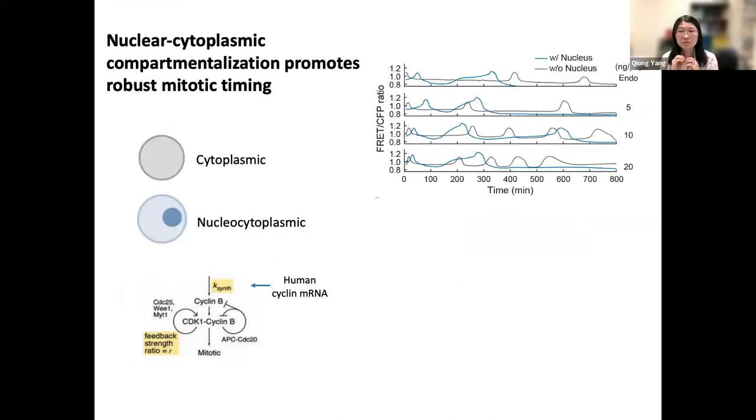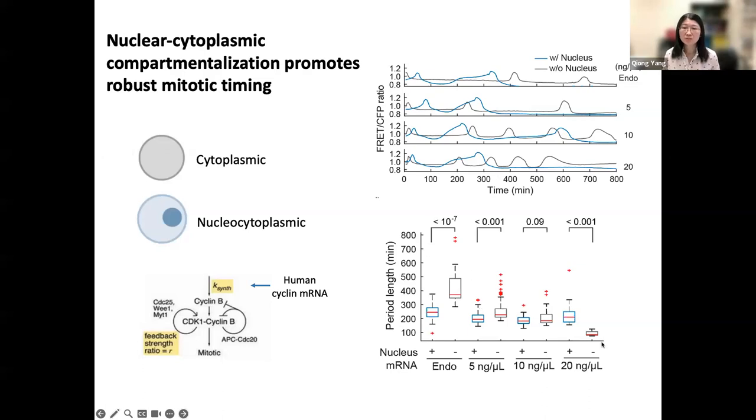However, to our surprise, if we add nuclei into the system to create nuclear cytoplasmic compartments, the same circuit responds to cyclin B very differently. I'm showing you two example traces here. The gray is a non-nuclear droplet with higher mRNA showing faster oscillations, but not the nuclei droplets. More statistically, you find that the period is tuning down with mRNA, but for the nuclear droplets, it's pretty flat. This is still work that is ongoing. We're trying to understand why this compartmentalization is affecting cell cycle behavior.